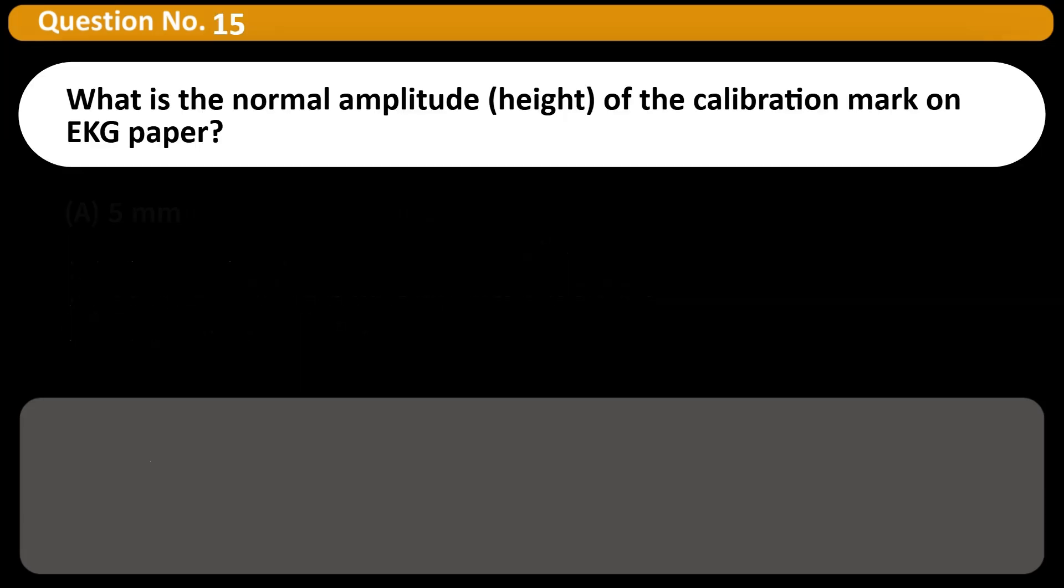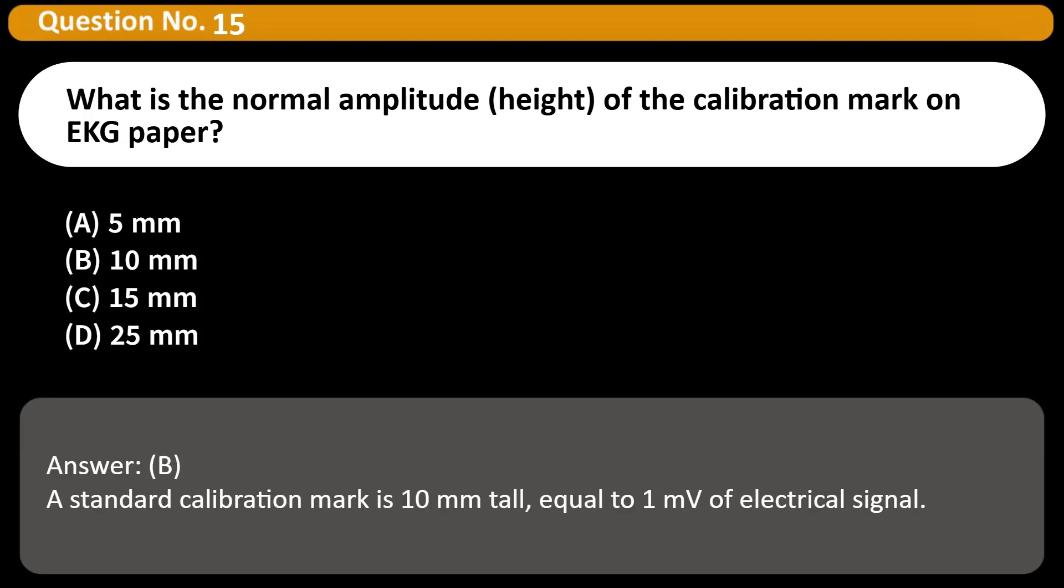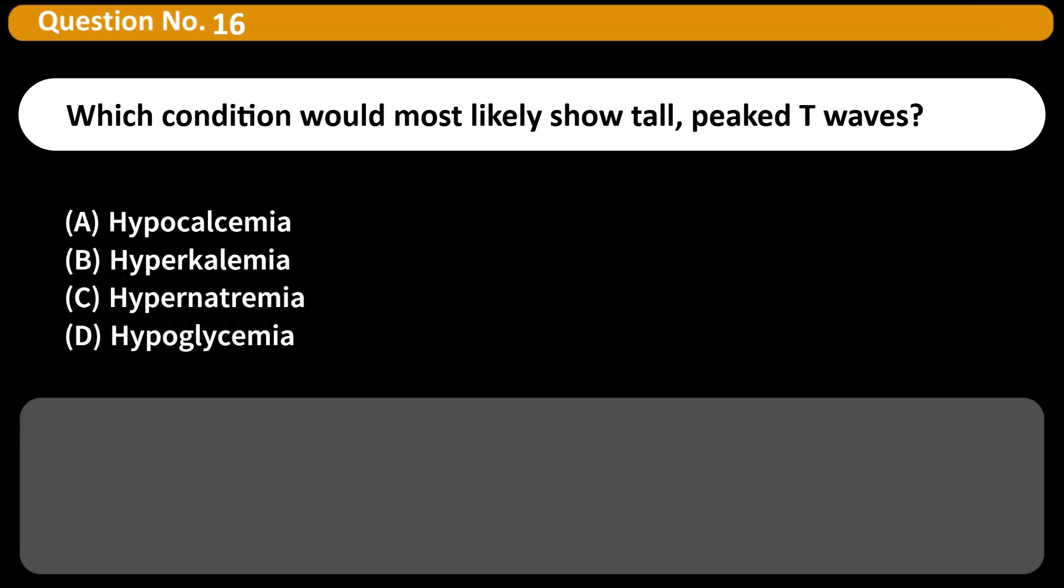What is the normal amplitude, height, of the calibration mark on EKG paper? A. 5 mm B. 10 mm C. 15 mm D. 25 mm Answer B. A standard calibration mark is 10 mm tall, equal to 1 mV of electrical signal.